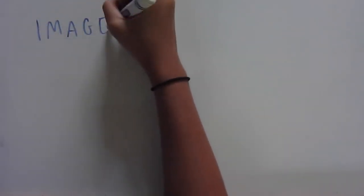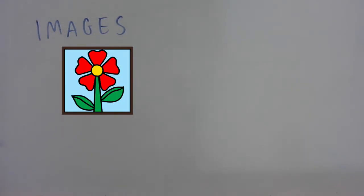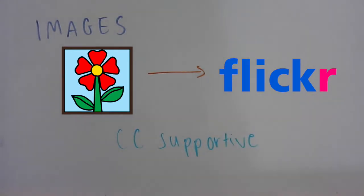If you want to add a CC license to your images, it's really easy to find an image sharing site which has built-in CC licensing, like Flickr, and upload your content there.